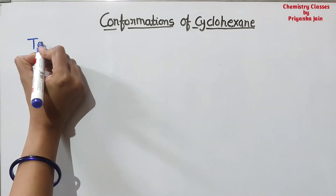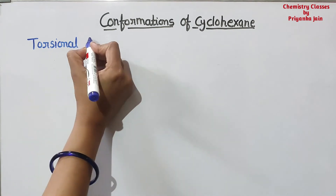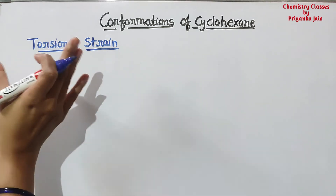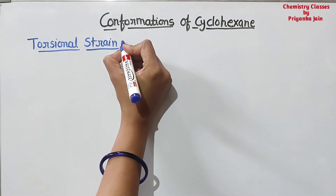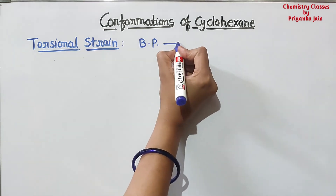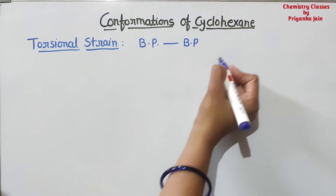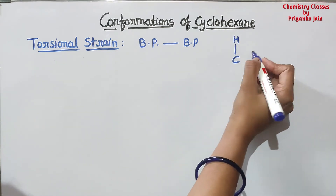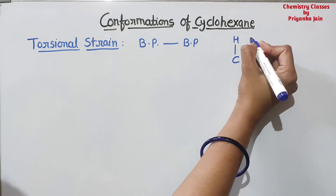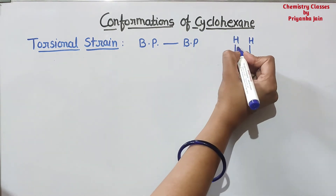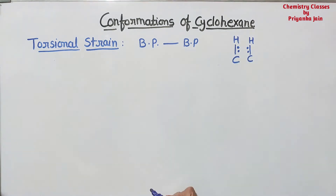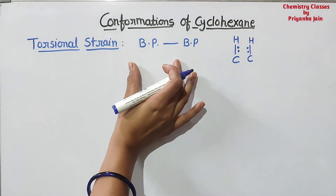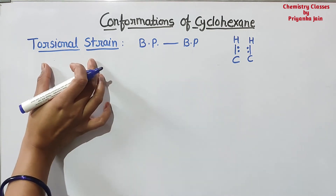The first is torsional strain. It is a type of strain that exists whenever there is a repulsion between bonding pairs of electrons. If there is one CH group and nearest to it, at a nearer position, another CH group is present, then these are bonding pairs of electrons and there will be a repulsion between them. A type of strain generated in such molecules is called torsional strain.